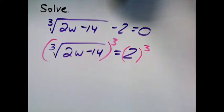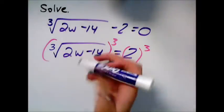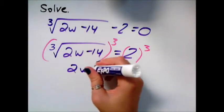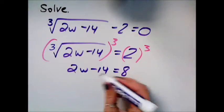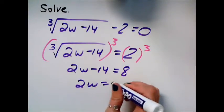The third power and the third root cancel. I'm just left with 2w minus 14 equals 2 to the third, which is 8. And then add 14 to both sides, so I get 22.